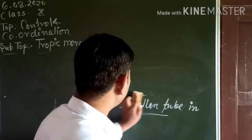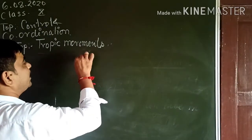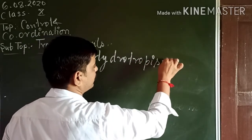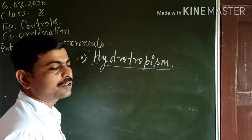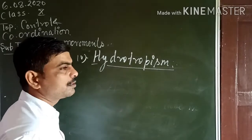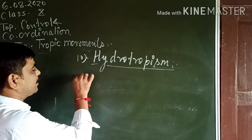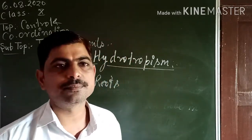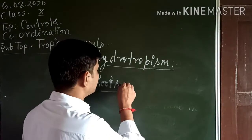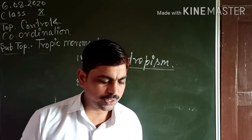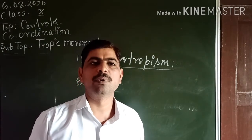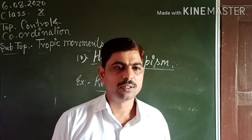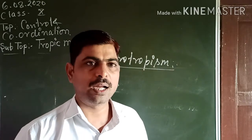The next type of movement is hydrotropism. Hydrotropism is the growth response of the plant towards water — water acts as the stimuli here. An example is roots, which always grow towards water, so roots show positive hydrotropism. Dear students, all these growth movements have to be studied in the form of activities as given in your book — consult the book and study the activities properly.